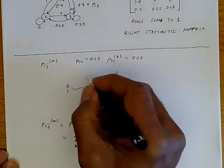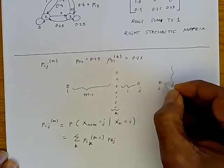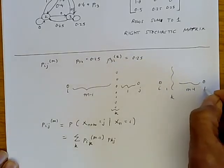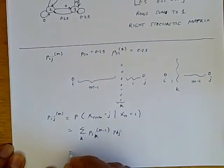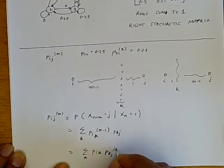Alternatively, we can go from i to one of the different k states in one step, and then the remainder can be done in m minus one steps. Therefore, we can also write this down as sum over k, Pik and Pkj in m minus one steps.